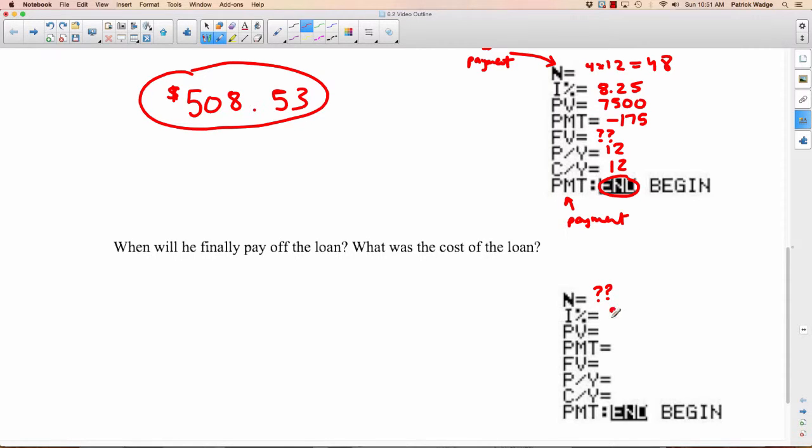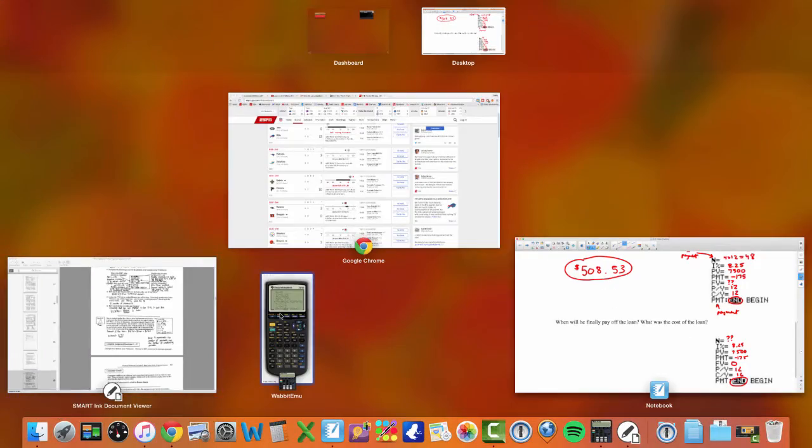Most things stay the same. The percentage stays the same, the present value stays the same, the payment stays the same, 175. The future value—well, if we want to know when it's paid off, what's the future value when it's paid off? The future value would be 0. It's all paid off, there's nothing left. This would still be 12, 12, and N. So we just got to change a couple things.